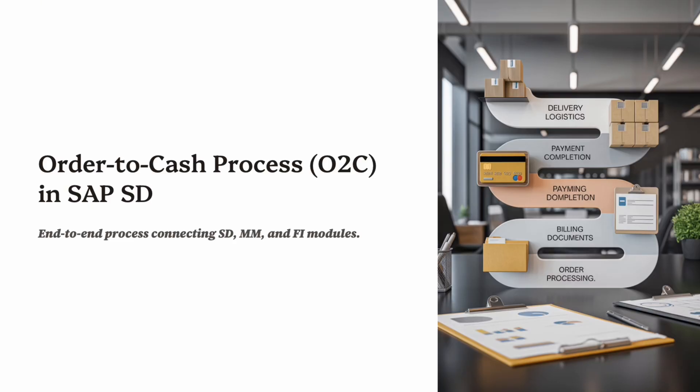This process connects every major department: Sales and Distribution (SD) for sales orders and deliveries, Materials Management (MM) for goods movement, and Financial Accounting (FI) for billing and payments. In short, O2C equals order, delivery, billing, and payment. It's the backbone of every business running on SAP because it tracks the entire flow of revenue from customer demand to cash collection.